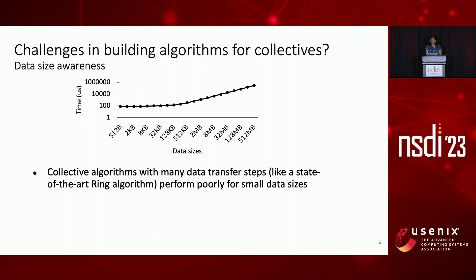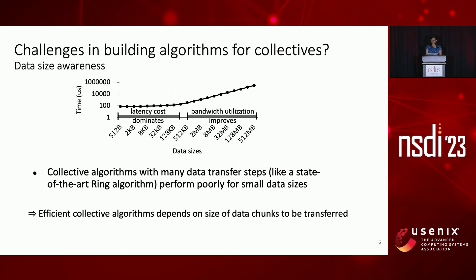Finally, the performance of a collective algorithm depends on the size of the data chunks that must be communicated. In this graph, we show the time it takes to transfer data sizes across an NV link connection. With small data sizes, the latency cost of transfer dominates, whereas bandwidth utilization only comes into picture as we move to larger data sizes. Collective algorithms with many steps of data transfers, like a state-of-the-art algorithm called the ring algorithm, end up not performing well for small data sizes. Thus, these algorithms need to be designed depending on the size of the data that needs to be transferred.